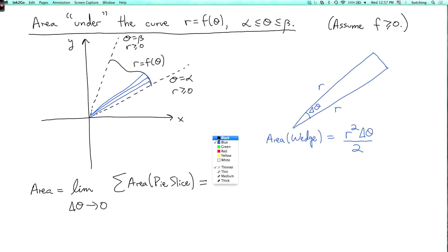Okay, so we get that the area of the region we care about is the limit as Δθ goes to zero of the sum of r²Δθ/2, where r is evaluated at some sample point on our theta interval of length Δθ. And in the limit, this becomes the integral from α to β of r²/2 dθ.